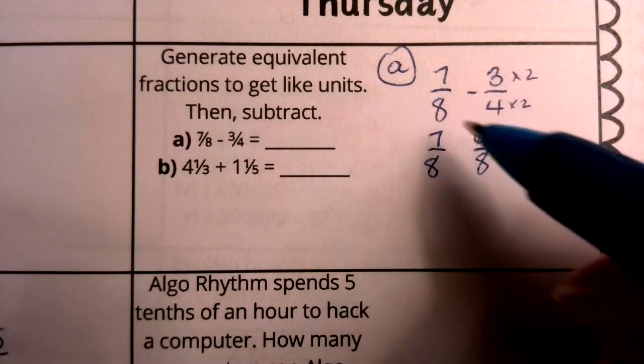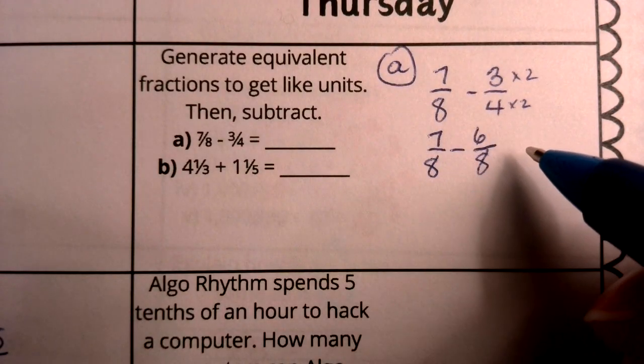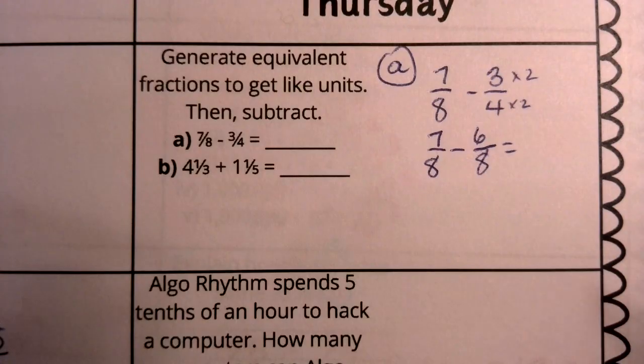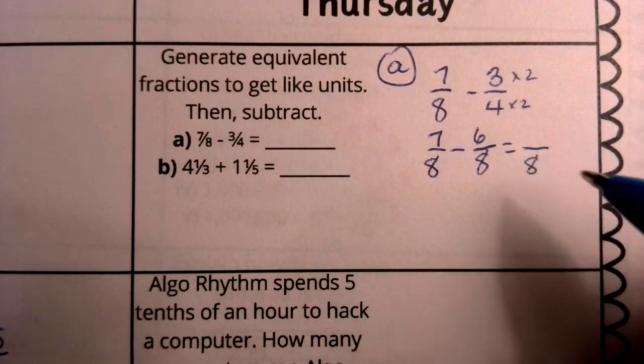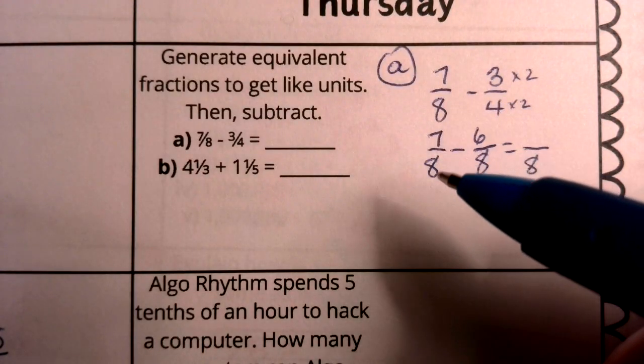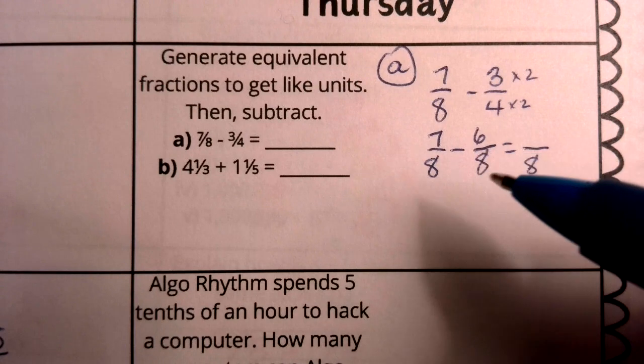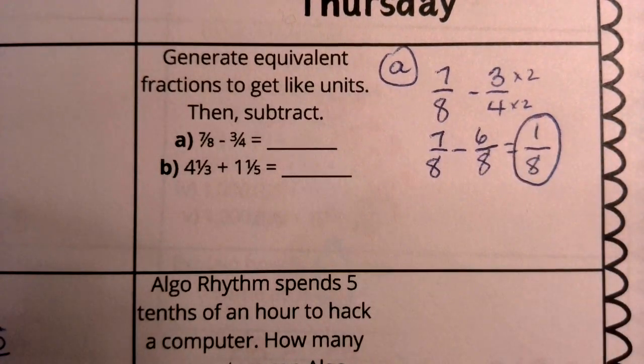Notice, boys and girls, 6/8 equals 3/4. We've not changed the value, but we have made a problem where we have like units. Now my denominator is going to stay the same. My whole is still divided up into this number of parts. But now, if I have 7/8 and I subtract 6/8, I now have 1/8. So my answer to this question will be 7/8 minus 6/8 equals 1/8.